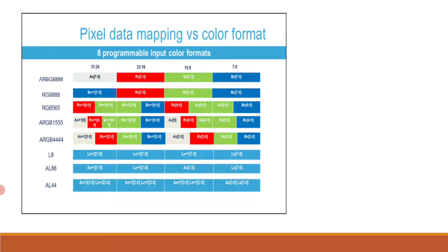Indirect color formats include L8, AL44, and AL88. L8 contains 8-bit luminance, also referred to as a CLUT index. AL44 has 4-bit alpha and 4-bit luminance. AL88 has 8-bit alpha and 8-bit luminance.